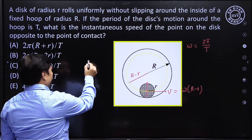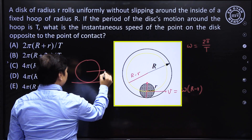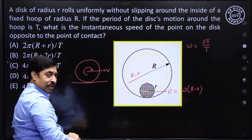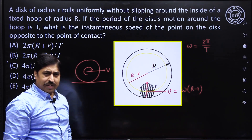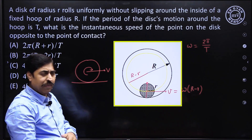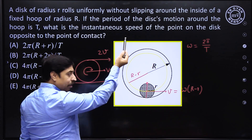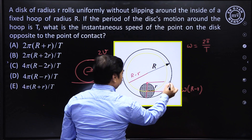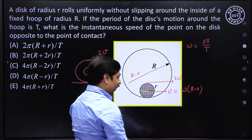The disk must also be spinning — only then can it roll without slipping. If a round object is rolling without slipping and its center is moving at speed v, then the topmost point moves at speed 2v. So if the center has speed v, the point opposite to the contact point has speed 2v. That is our answer: 2v.